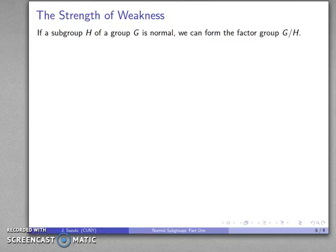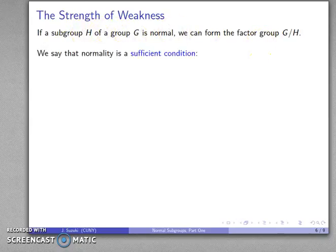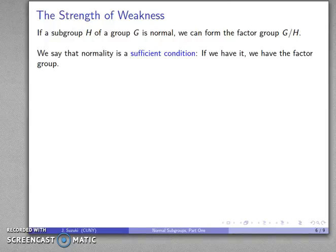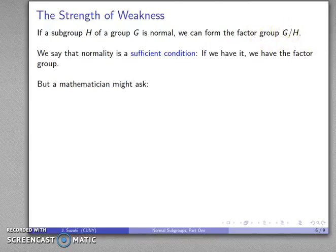Well we are in an interesting position now. If a subgroup H of G is normal, we can form the factor group G over H. We say that normality is a sufficient condition. If we have it, we can guarantee the existence of the factor group. But a mathematician might ask: can we make do with less?